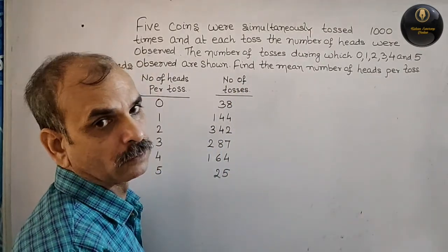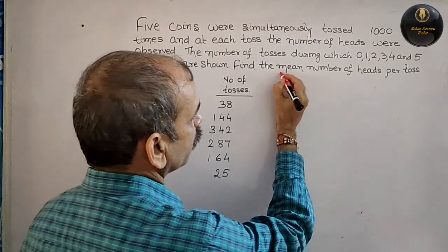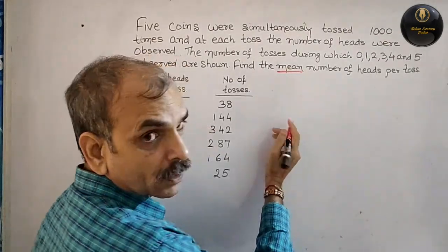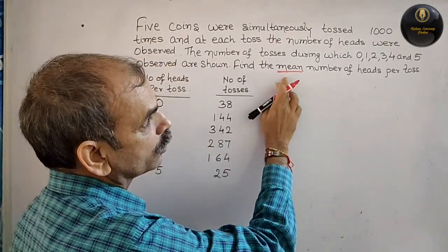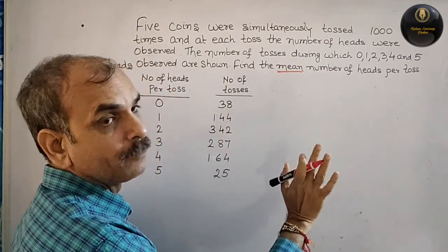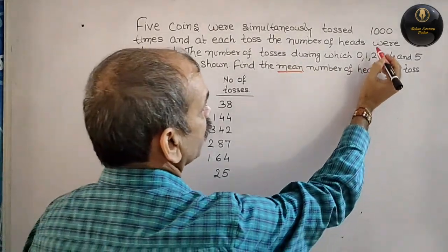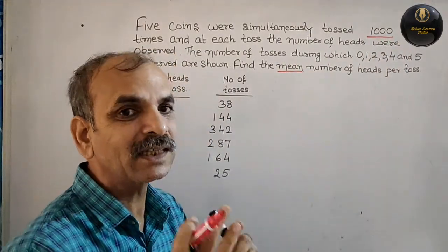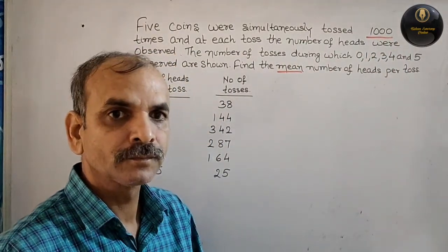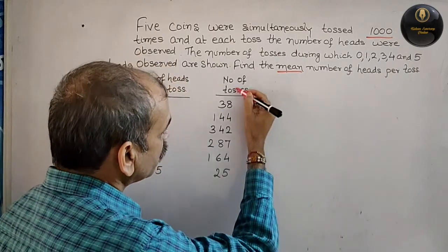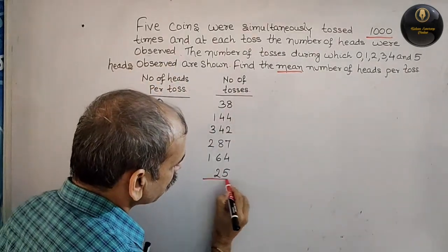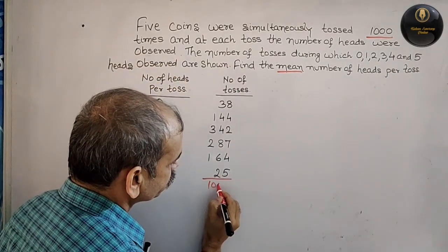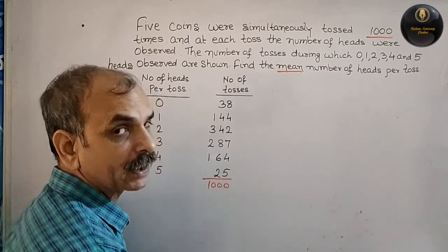We have to find the mean. The experiment was done 1000 times, so that is the frequency. The sum of number of tosses is 1000.